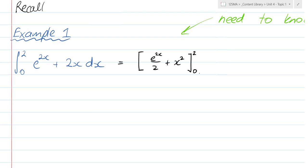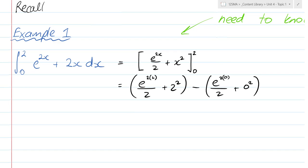So, there's our integral, what do we do with that now? E to the 2 times 2 over 2 plus 2 squared, and we subtract from that the substitution of the lower bound: e to the 2 times 0 over 2 plus 0 squared.